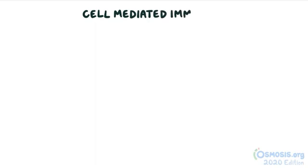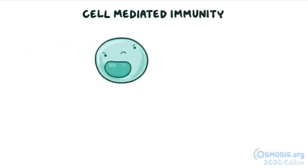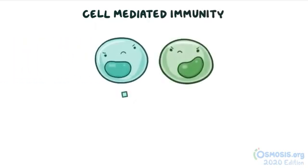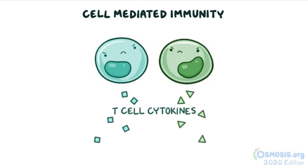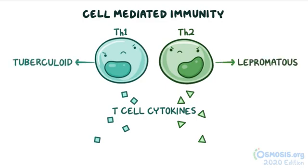The host responds to leprosy through cell-mediated immunity via T helper cells. These cells help the activity of other immune cells by releasing T cell cytokines, and there are two types of T helper cells: Th1 and Th2. Depending on which T helper cells are involved in the immune response, there are two major forms of leprosy: lepromatous and tuberculoid.